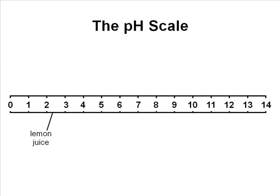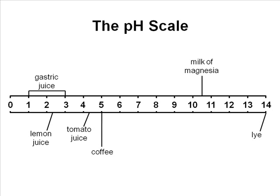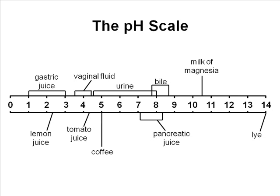So here's where lemon juice falls. Tomato juice and coffee, they're all on the more acidic end of things. Milk of magnesia and lye are on the alkalinic or basic end of things. Now if we add some human fluids or human substances, gastric juice is very acidic. Vaginal fluid is slightly acidic. Urine can be anywhere from slightly acidic to reasonably basic. Bile is reasonably basic, as is pancreatic juice. Blood and semen are slightly on the basic side of neutral.